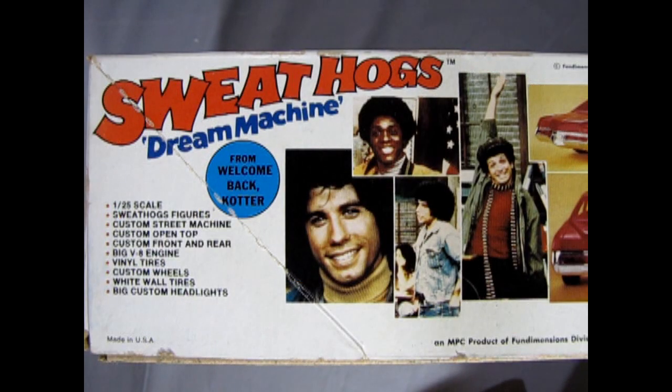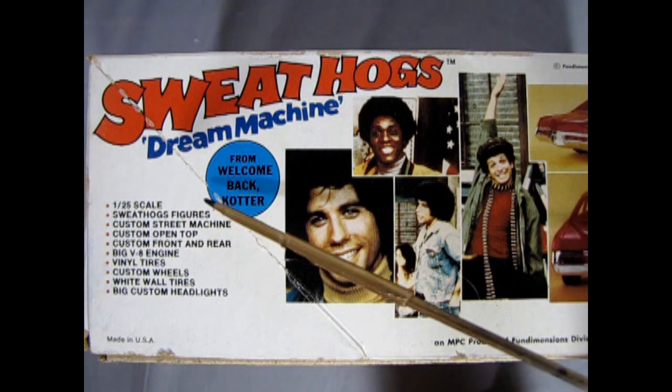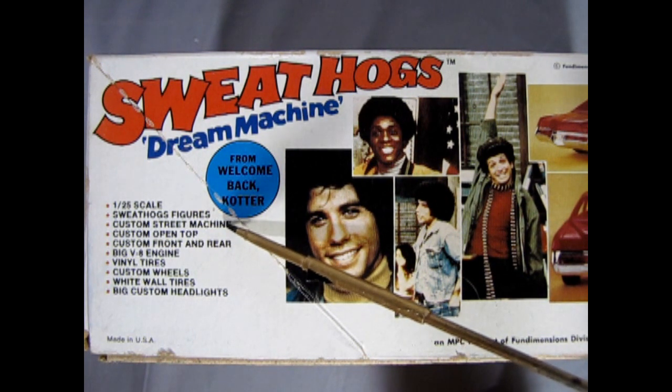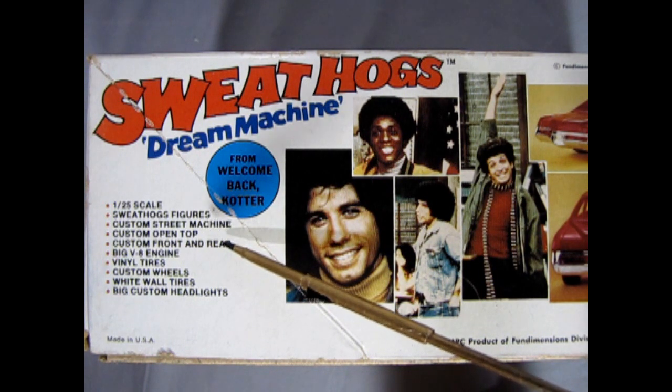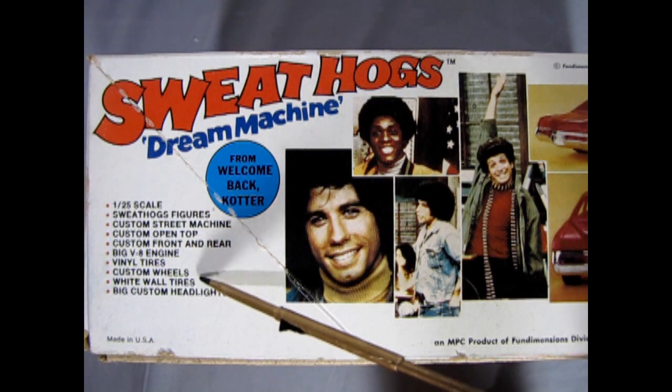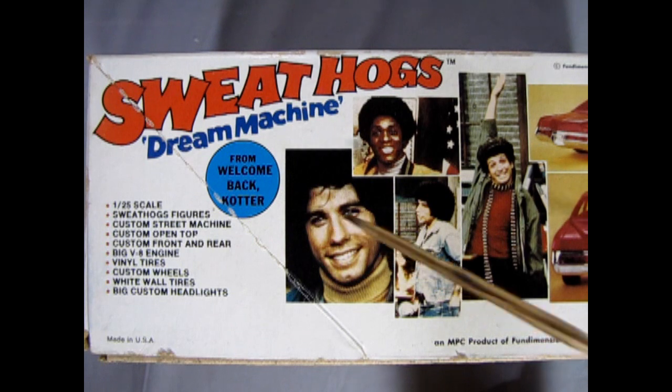Here on the side of the box we have the Sweat Hogs Dream Machine. This is a 1/25th scale model kit. It comes with the Sweat Hog figures, custom street machine, custom open top, custom front and rear, big V8 engine, vinyl tires, custom wheels, white wall tires, big custom headlights. Of course from Welcome Back Cotter.